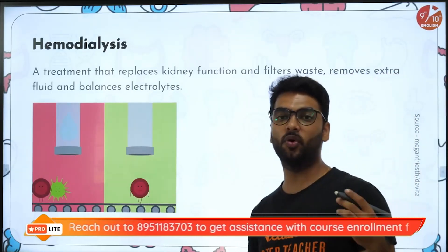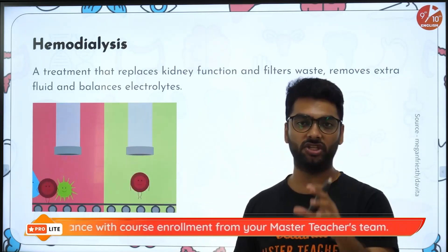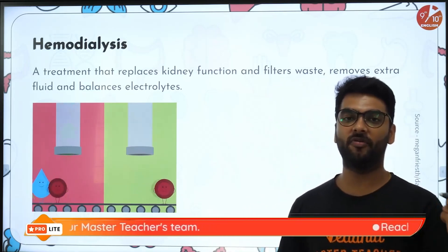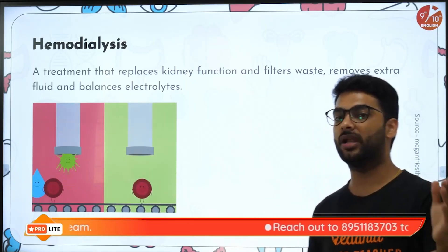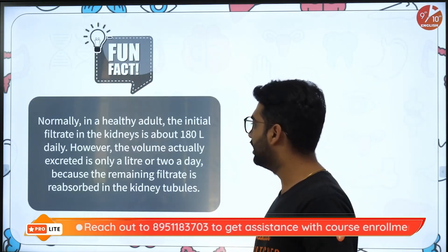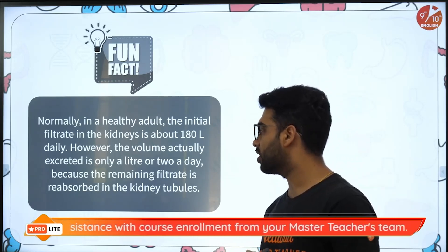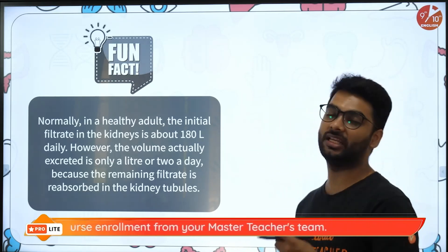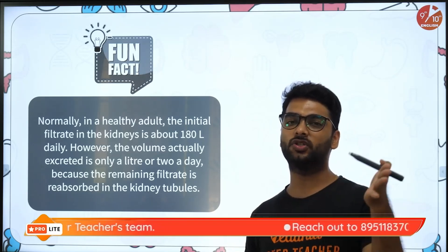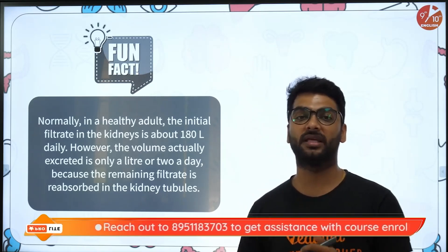There is a process called hemodialysis. It is a process when the kidneys get infected or injured and are unable to filter the blood. The blood has to be artificially filtered with the help of a machine called the dialyzer, and the process is called hemodialysis — that is filtration of the blood. Normally in healthy adults, the initial filtrate in the kidney is about 180 liters daily. However, the volume actually excreted is only 1 to 2 liters a day, because the remaining filtrate is reabsorbed in the kidney tubes. So what happens to the remaining 178 liters of filtrate? It gets reabsorbed into the blood.